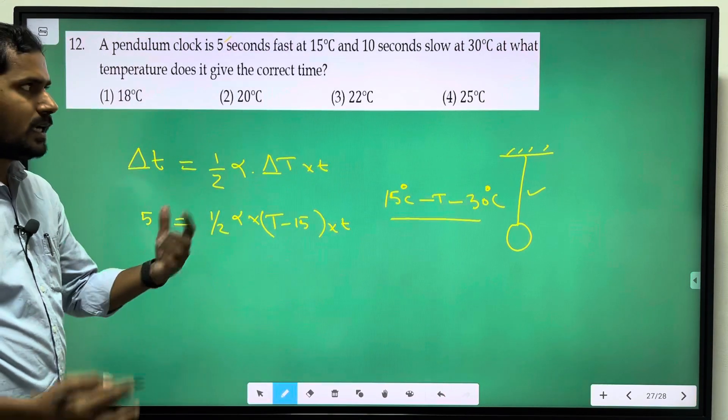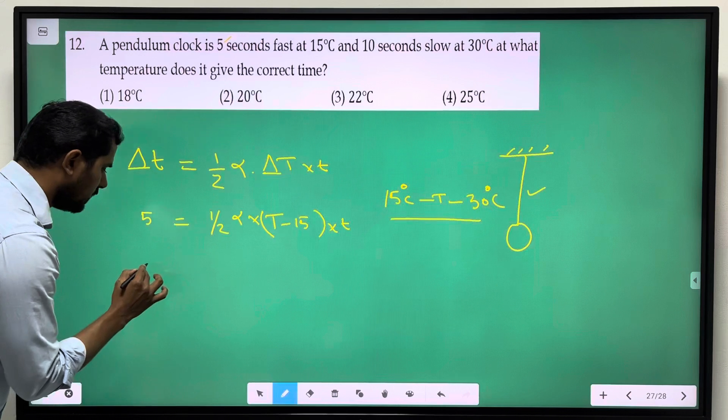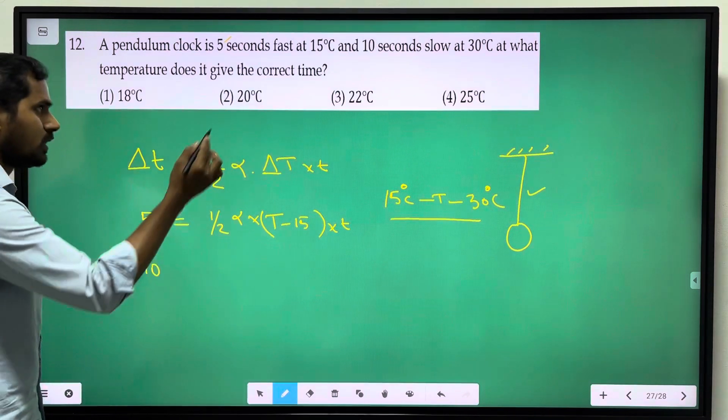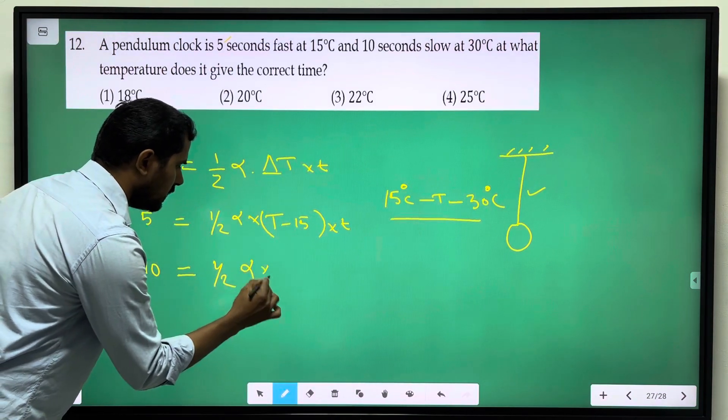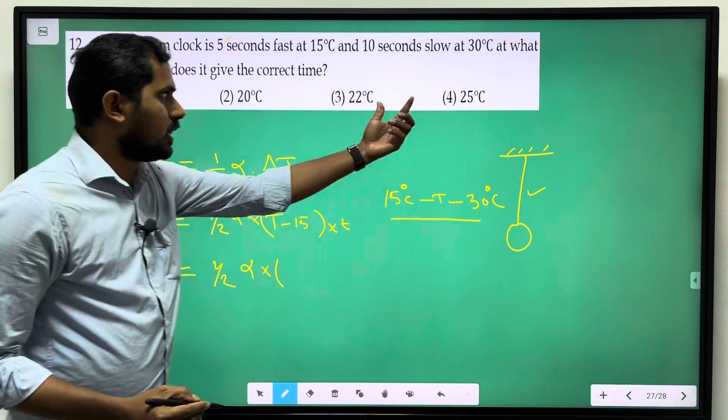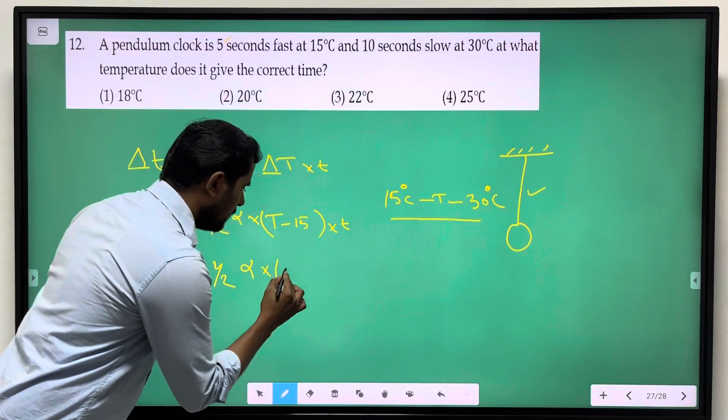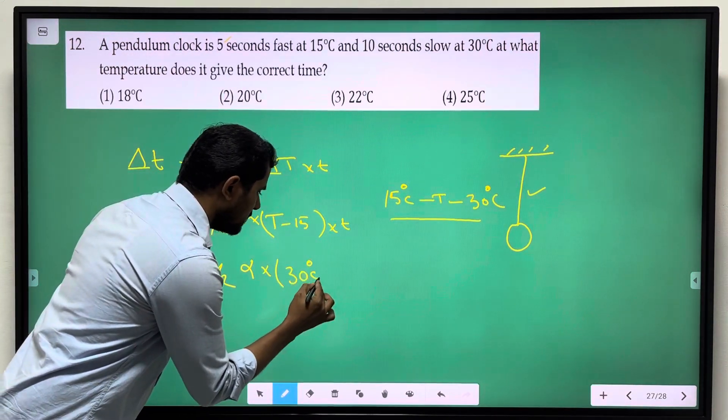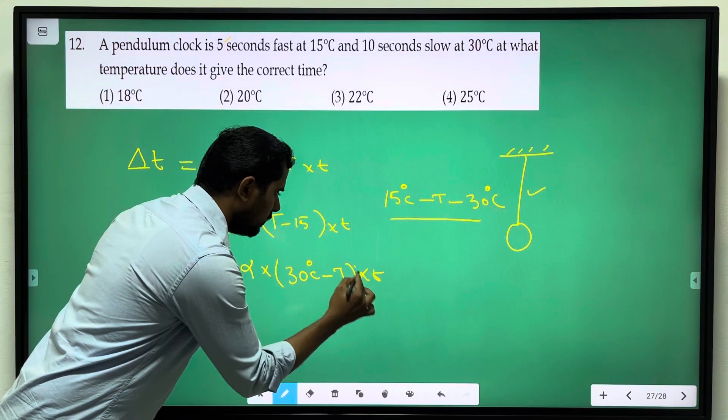Then second situation, equation form. Change in time 10 is equal to 1 by 2 alpha into 30 degrees Celsius, 30 degrees Celsius minus t into t.